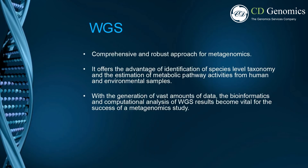Whole genome shotgun sequencing, WGS, has been increasingly recognized as the most comprehensive and robust approach for metagenomics. It offers the advantages of identification of species level taxonomy and the estimation of metabolic pathway activities from human and environmental samples. Several large-scale metagenomic projects have been recently conducted or are currently underway utilizing WGS. With the generation of vast amounts of data, the bioinformatics and computational analysis of WGS results become vital for the success of a metagenomics study.